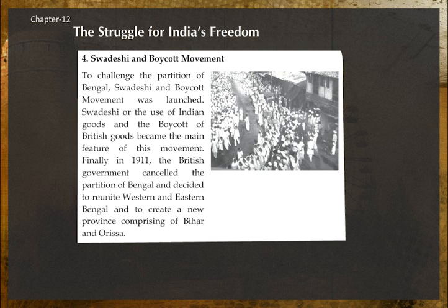Swadeshi and Boycott Movement: To challenge the partition of Bengal, the Swadeshi and Boycott movements were launched. Use of Indian goods and the boycott of British goods became the main feature of this movement. Finally, in 1911, the British government cancelled the partition of Bengal, decided to reunite western and eastern Bengal, and created a new province comprising Bihar and Orissa.